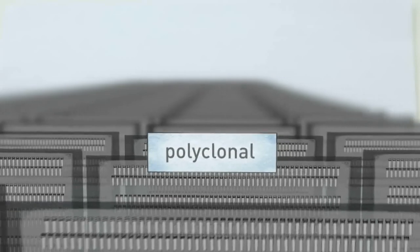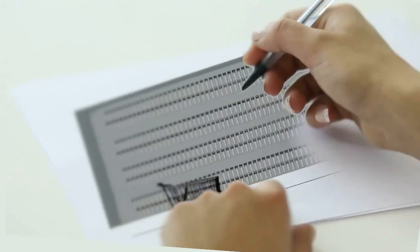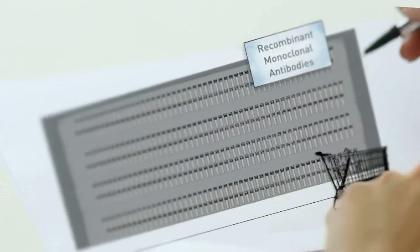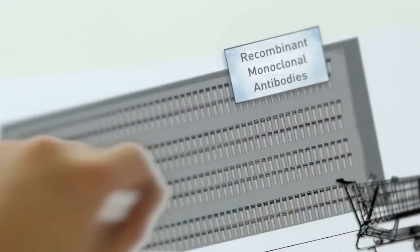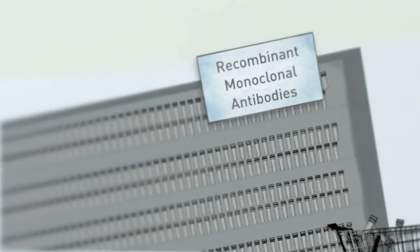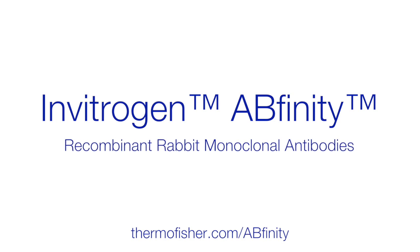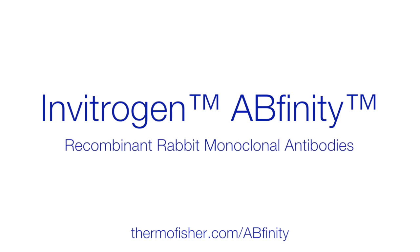Remember the hassle with having to revalidate every batch you get? When you can produce antibodies from cloned monoclonals, this really makes a huge difference. Research is always evolving and so are the research tools we use. The Abfinity recombinant antibodies set a new standard for specificity, sensitivity and consistency.